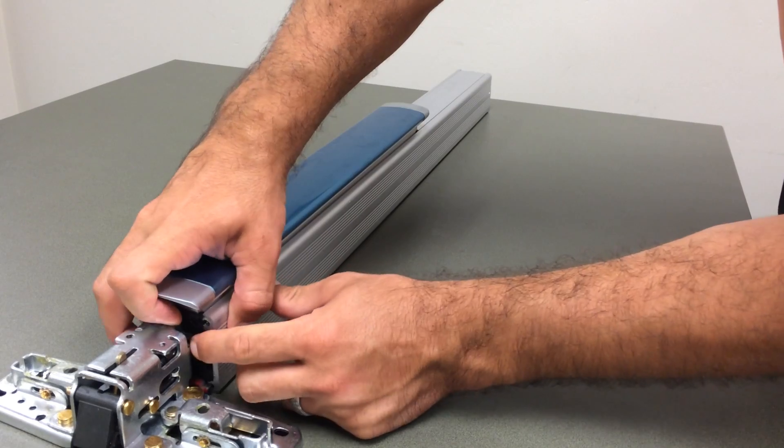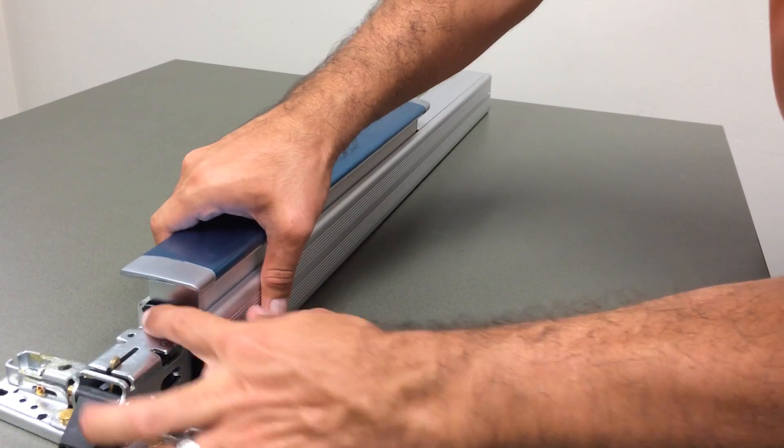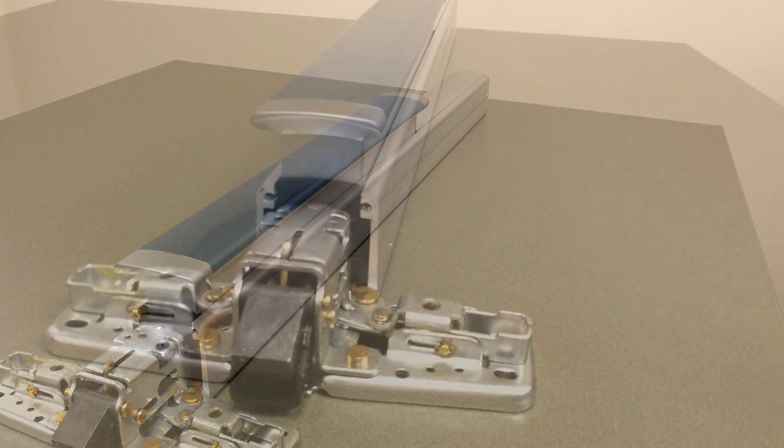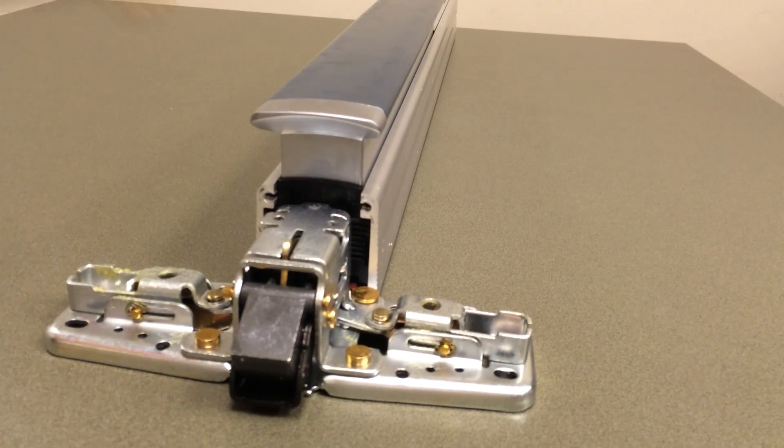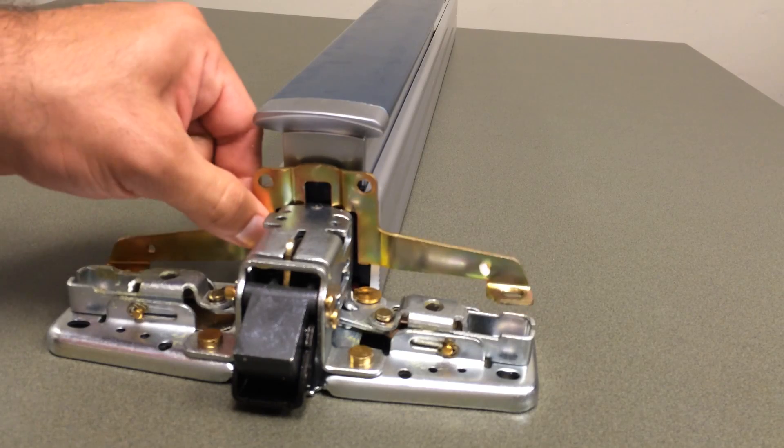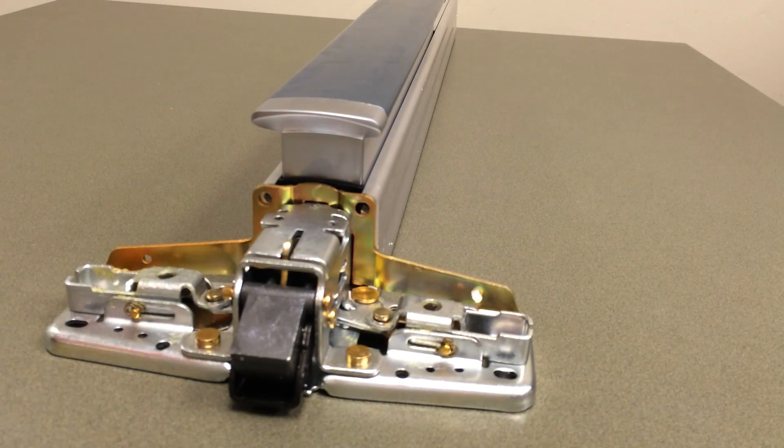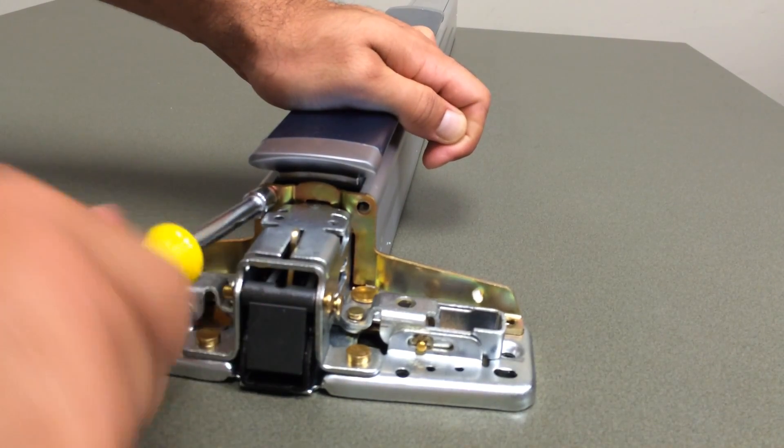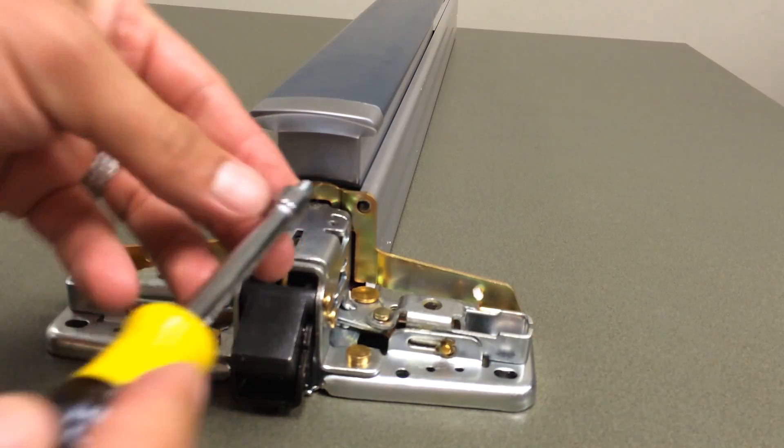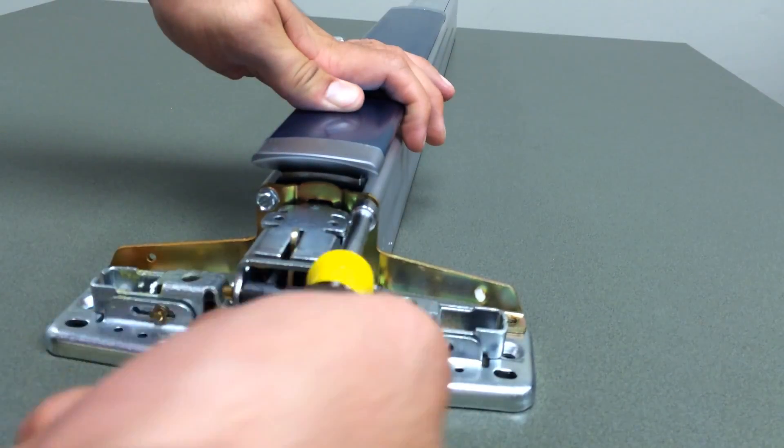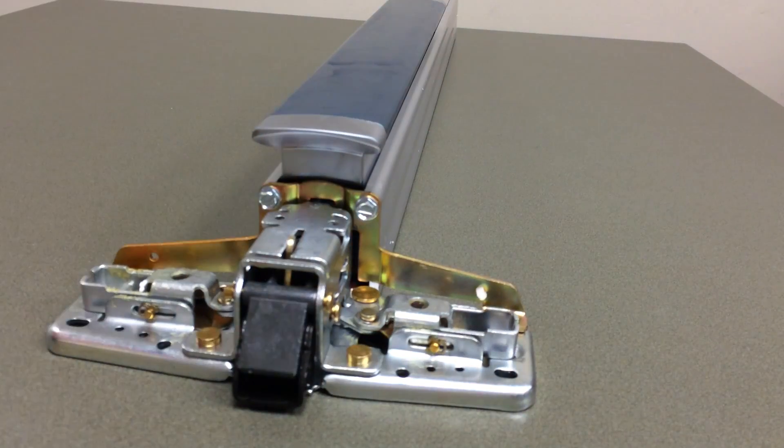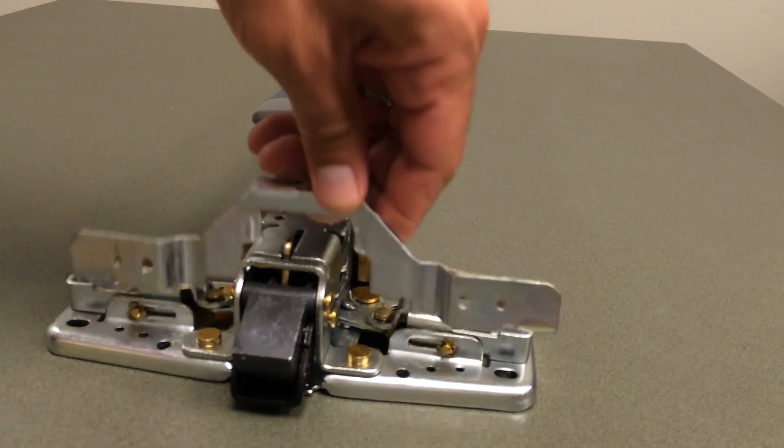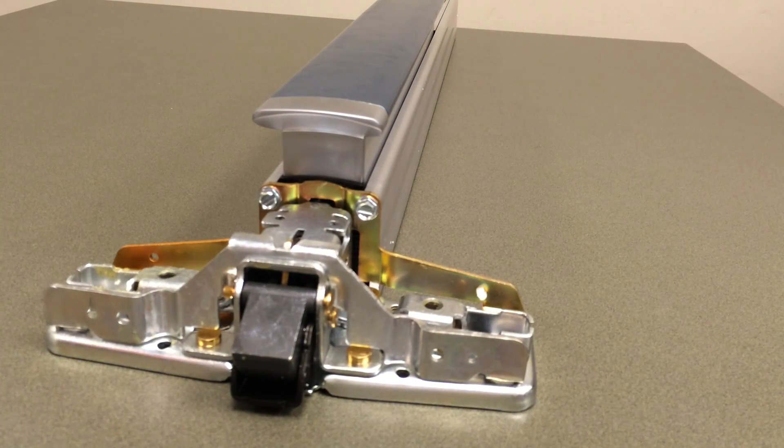Once that rail is on there, I'm going to grab those two screws and our 5/16 nut driver and replace that rear head bracket. Again, if needed, you can use a flathead screwdriver, but it is recommended to use the 5/16 nut driver, much easier. Then once I'm done with that, I'm going to replace the front head bracket and the head cover.